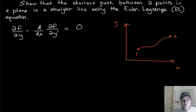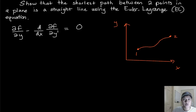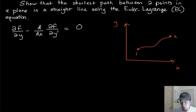Hey there, my fellow intellectuals. Today we're going to show that the shortest path between two points in a plane is a straight line, but we're going to use the Euler-Lagrange equation to show it. For those of us who've taken basic geometry, we've been told that the shortest distance between two points in a Euclidean plane is just a straight line. So if you have points one and two, the shortest distance between them is just a straight line.